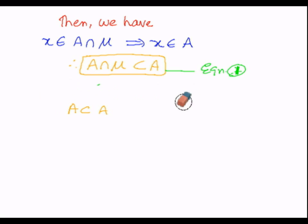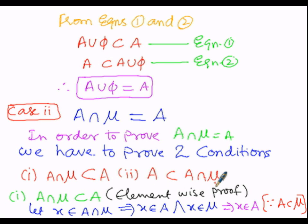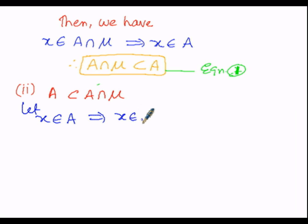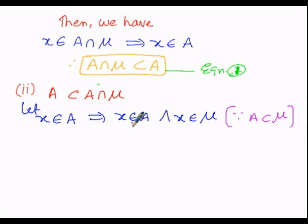For the second case, we prove A must be a subset of A intersection μ. Let X belong to set A. Since A is a subset of μ, X also belongs to μ. So X belongs to A and X belongs to μ. Since 'and' implies intersection, X belongs to A intersection μ.